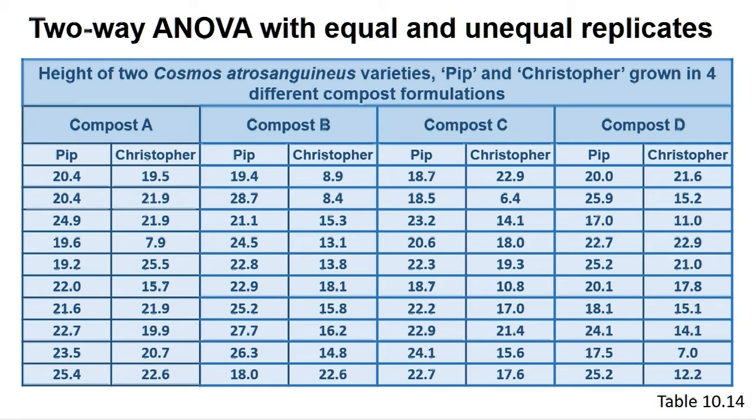That is, do the factors have a greater effect when combined than we might expect from simply summing their individual effects? For example, Table 10.14 gives the fresh weight of two varieties of Cosmos atrosanguineus, called Pip and Christopher, grown in one of four types of compost, eight weeks post-weaning from a tissue culture environment. The questions we can ask are whether any of the composts promotes superior height growth of the Cosmos variety in general, whether either of these varieties is more successful in making the transition from the tissue culture environment to the greenhouse, as measured by height, and finally, do the two varieties do better on different composts? This last question asks if an interaction occurs between the variety and compost type.